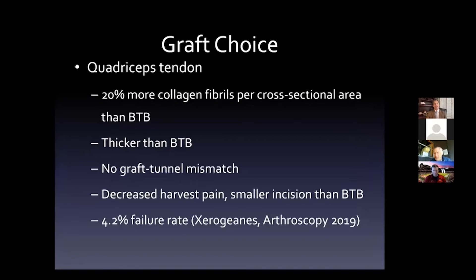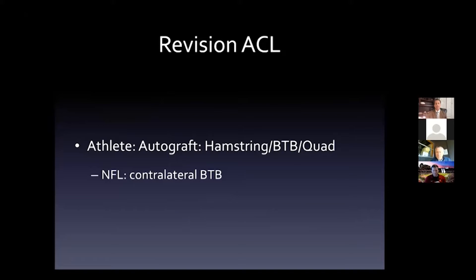The final trend we see is quadriceps tendon, with increased interest since 2014. Why? It has about 20 percent more collagen fibrils per cross-sectional area than BTB, it's thicker, you don't have graft-tunnel mismatch issues you can have with bone plugs, and there's decreased harvest pain with smaller incisions. Failure rates are similar to other autograft choices. In professional sports the standard is still BTB autograft, but we'll keep an eye on the quadriceps tendon moving forward.